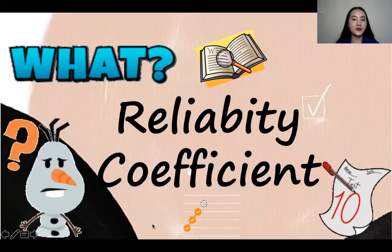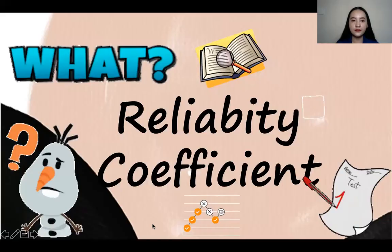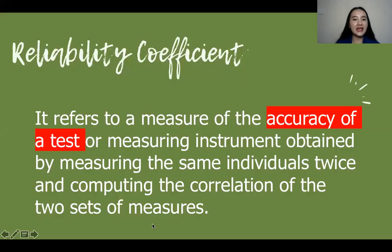So what is reliability coefficient? Reliability coefficient refers to a measure of the accuracy of a test or measuring instrument obtained by measuring the same individual twice and computing the correlation of the two sets of measure.